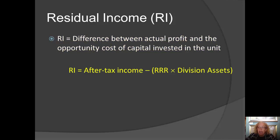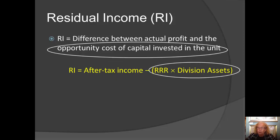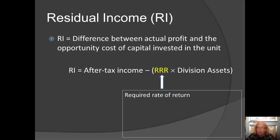The formula for residual income is the difference between after-tax income and RRR times the divisional assets. After-tax income is the measure of profit, and the RRR times divisional assets term represents what the firm is giving up because it gave these assets to this division instead of using them for some other purpose. RRR is the required rate of return — the return the firm expects the division to generate on the assets at the division's disposal.